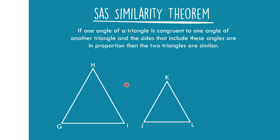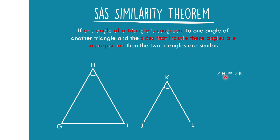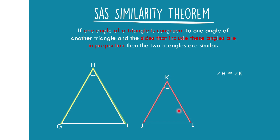Let's prove it first deductively. Let's say that angle H and angle K are the congruent angles of these triangles. The sides that include these angles: for angle H, we consider sides GH and HI; for angle K, we consider sides JK and KL.